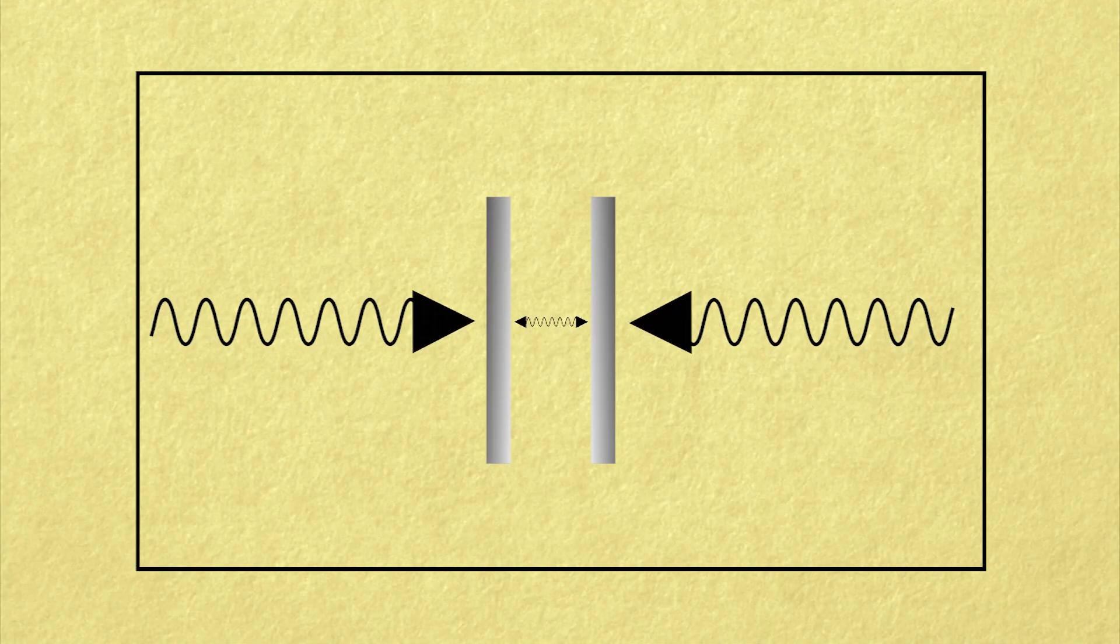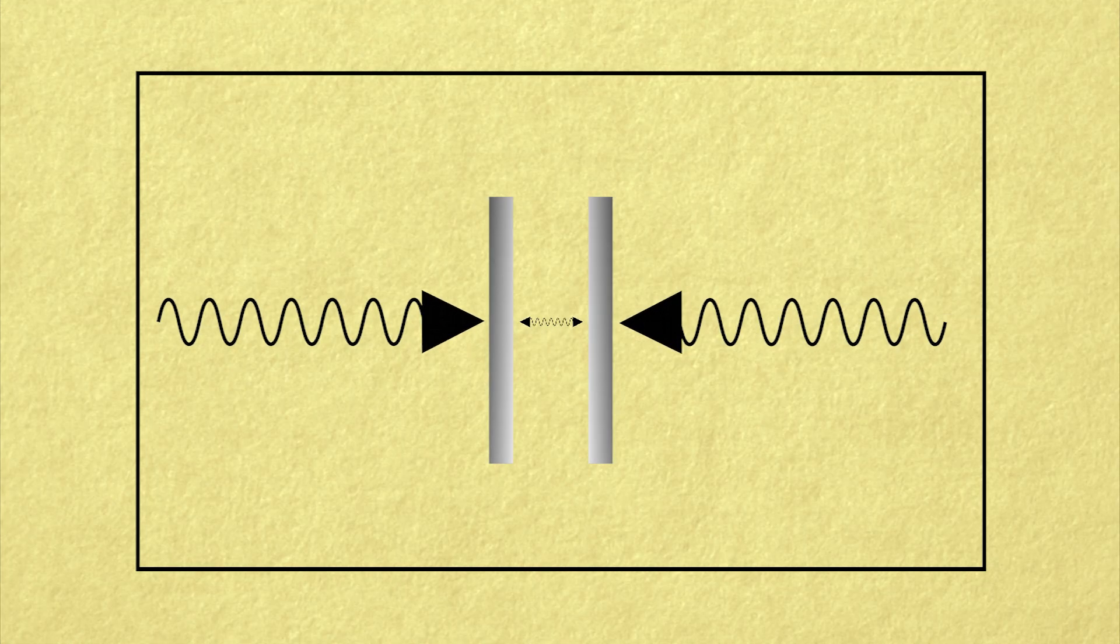And since there's more space on either side of the metal plates than in between them, the virtual particles exert a net force that pushes the plates towards each other. So even in a vacuum, the universe announces itself through the Casimir effect.